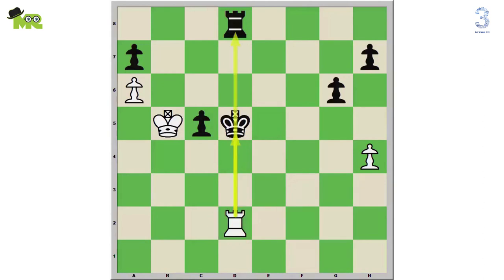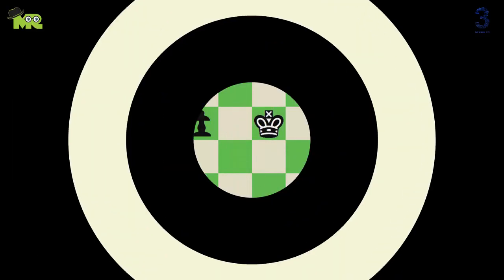And at the same time, the d2 white rook is making a skewer to the black d8 rook. Now black will move his king and the white d2 rook will capture the black d8 rook.